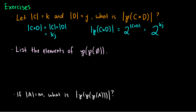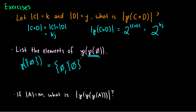The second exercise: list the elements of the power set of the power set of the empty set. Step by step: the power set of the empty set is {∅}. Now we want the power set of {∅}, which we've already worked out — it's the set containing the empty set and the set containing the empty set. Taking power sets of power sets becomes quite a pain to write out very quickly.